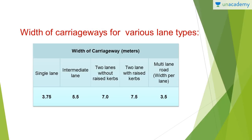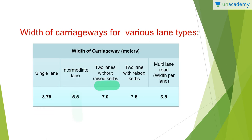Next, we have the width of carriageways for various lane types. For a single lane, you have 3.75 meters. For intermediate lane, you have 5.5 meters. For two lanes without raised curbs, you have 7 meters. Two lanes with raised curbs, you have 7.5 meters. And for a multi-lane road, the width per lane is 3.5 meters. We will see what curbs are in the coming section of this video.